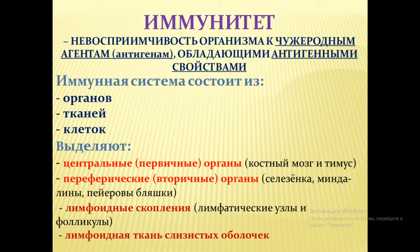Антигенные свойства — это способность чужеродного агента, антигена, приводить в активное состояние органы и механизмы иммунной системы человека. Иммунная система состоит из органов, тканей и клеток. Это именно совокупность взаимосвязанных органов, тканей и клеток. Выделяется несколько видов органов иммунной системы.